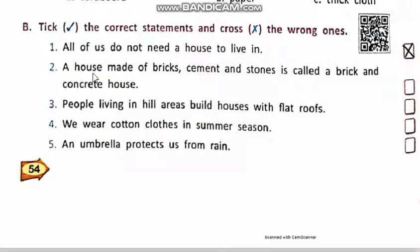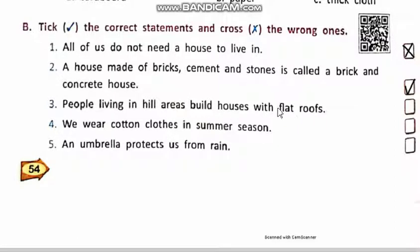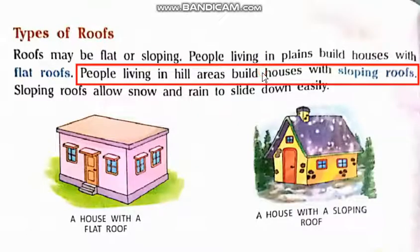Number 2: A house made of bricks, cement, and stone is called a brick and concrete house. This statement is correct, so we write tick. Number 3: 'People living in hill areas build houses with flat roofs.' This statement is wrong, because in hill areas people build houses with sloped roofs. So we write cross in front of this statement.